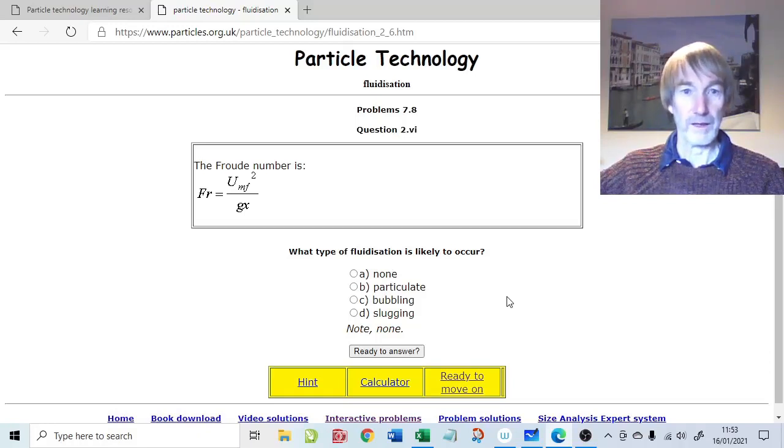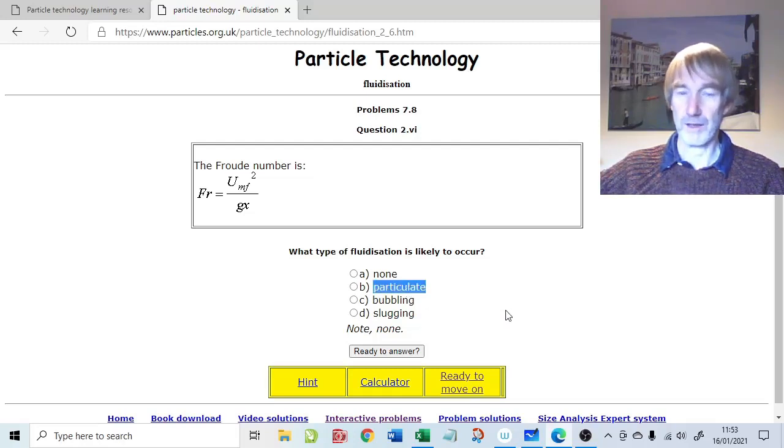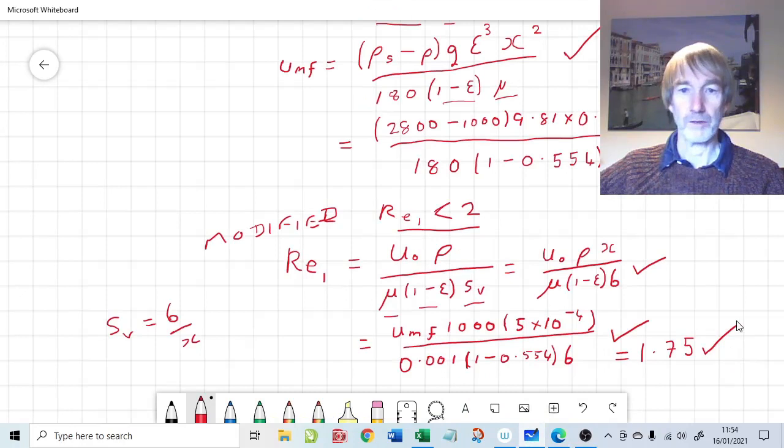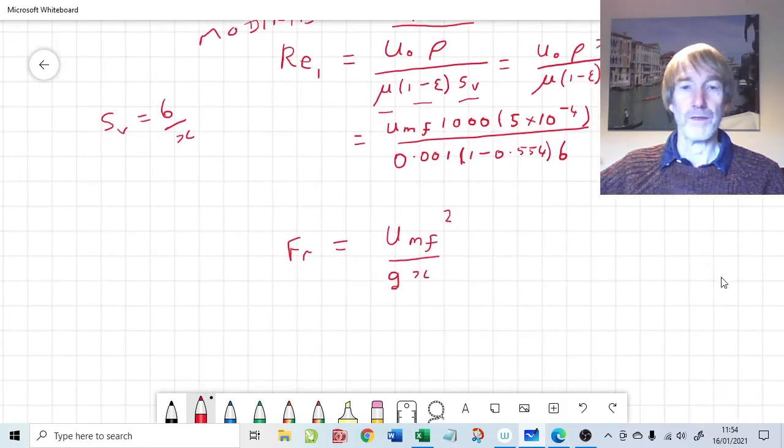The last part is to calculate the Froude number. We need to know whether we've got nice particulate fluidization. That's the straightforward type. It's a liquid system, so undoubtedly it will be particulate. Do we have bubbles taking place in the fluidization? Or do we have slugging taking place, which is a kind of bubbling, but it's bubbling on mass, where slugs of gas go through. And you notice I've slipped up there and said gas, because liquid systems tend to give you particulate. So that's almost a given that this will be particulate. Particulate is where the particles behave in a uniform way. They nicely expand and contract according to what the flow rate is.